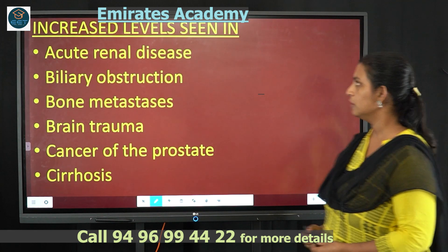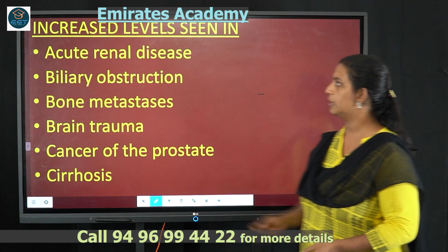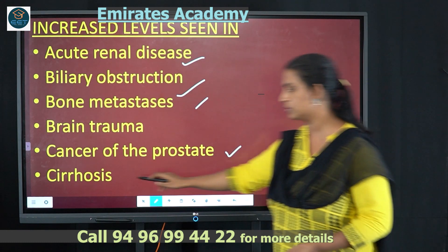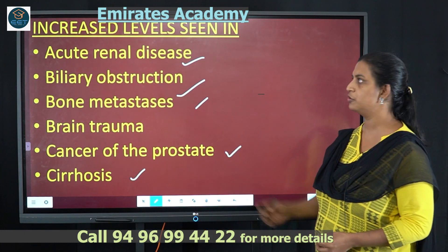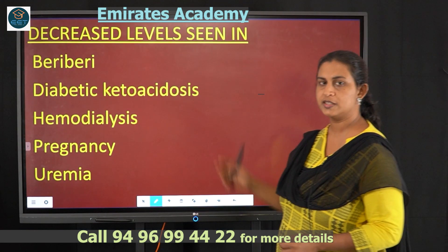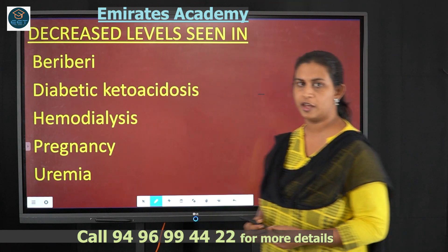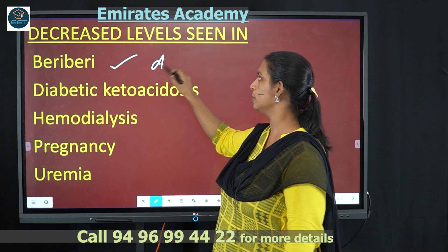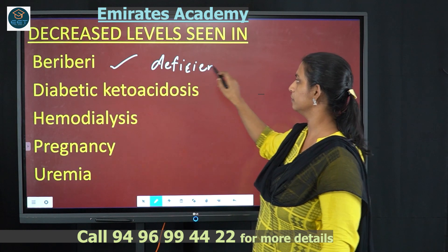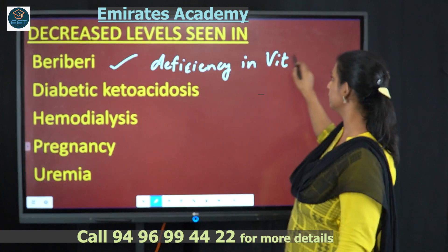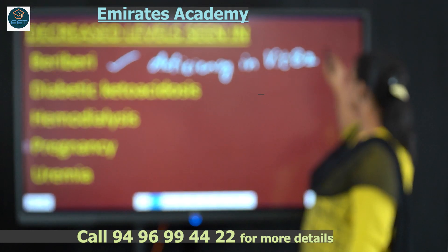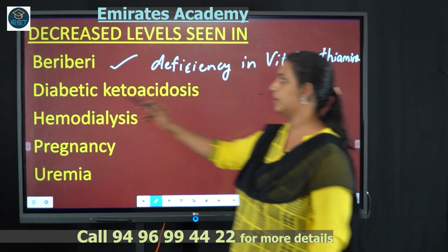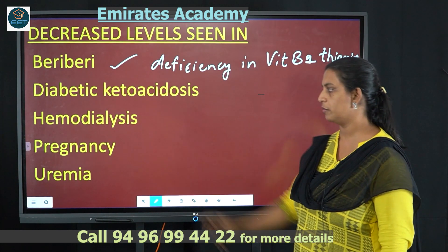Increased levels of AST are seen in acute renal disease, biliary obstruction, bone metastasis, brain trauma, cancer of the prostate, and cirrhosis. Decreased levels of AST are seen in conditions such as beriberi (vitamin B1/thiamine deficiency), diabetic ketoacidosis, hemodialysis, pregnancy, and uremia.